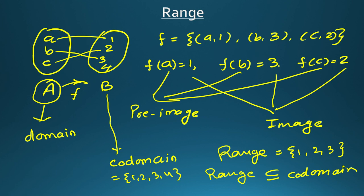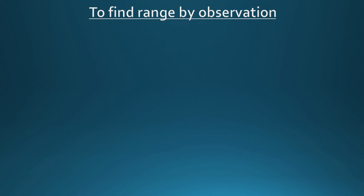Range is the subset of codomain — it can be equal to the codomain also. So range is always the second element if the function is written in the form of ordered pairs; if not, then after the equals sign this is the range. Now we will see how to find the range. There are two methods. The first is by direct observation, because you have seen some special types of functions. For example, f(x) = ⌊x⌋, the greatest integer function.